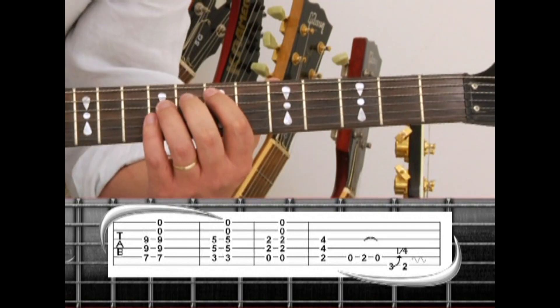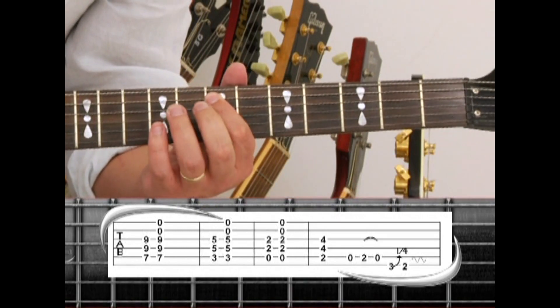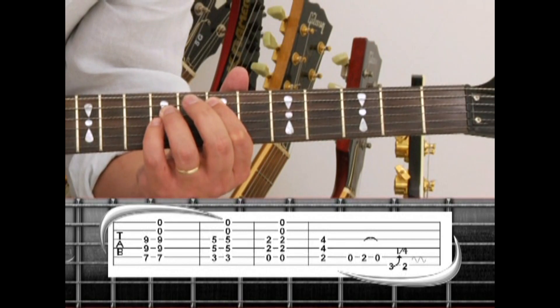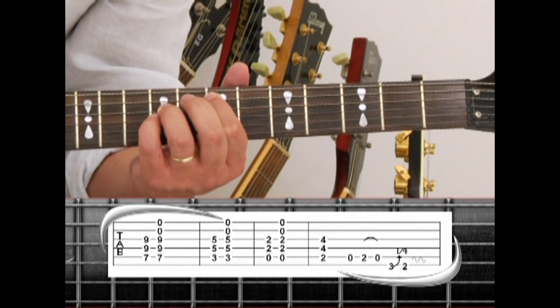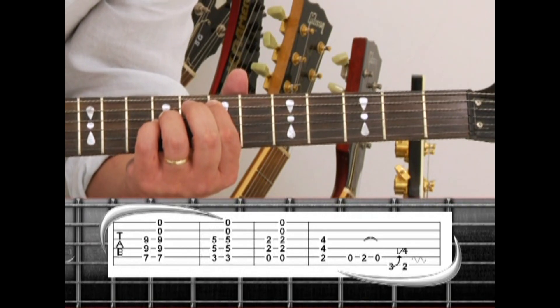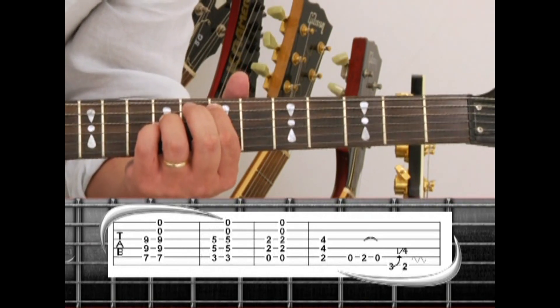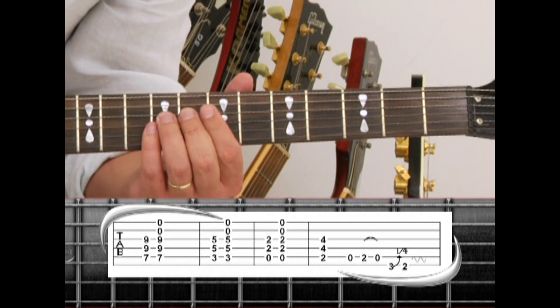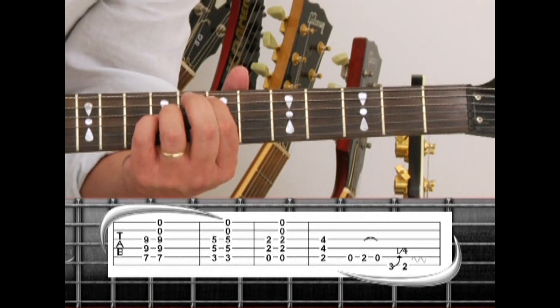The E5 is on the 5th string 7 with the index, 4th string 9 with the ring and 3rd string 9 with the pinky. Randy also adds the open 1st and 2nd string drone notes along with this, often switching between them. So we have E5 and E5 drone.